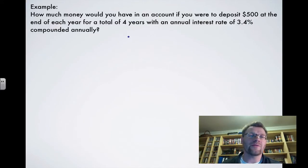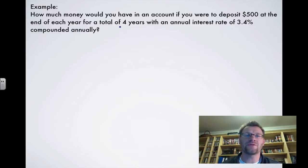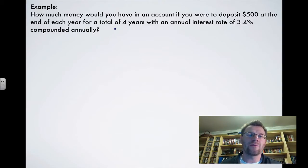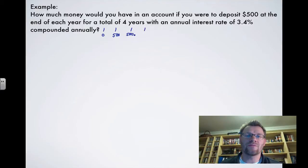Here's an example: how much money would you have in an account if you were to deposit $500 at the end of each year for a total of four years, with an annual interest rate of 3.4% compounded annually? On a number line, at time zero you put in no money. At the end of year one, you put in $500; at the end of year two, $500; at the end of year three, $500; and at the end of year four, $500.